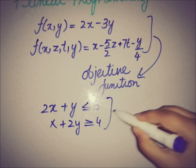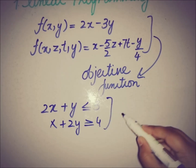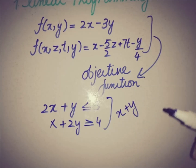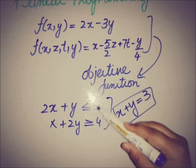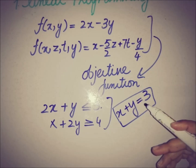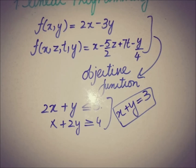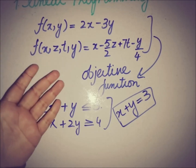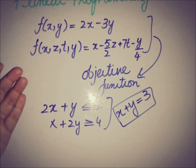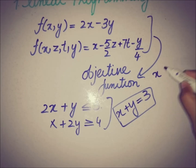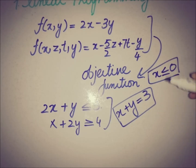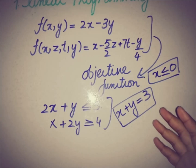A constraint can be an inequality, or we can also write any constraint as an equality — both forms are valid constraints. An important condition is that all variables — x, y, x, z, t — should be positive or, at the least, zero.